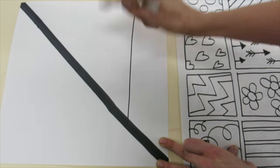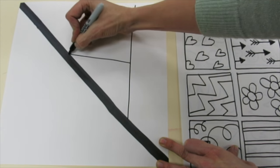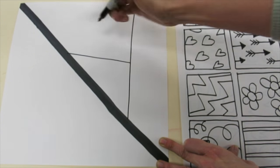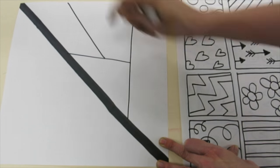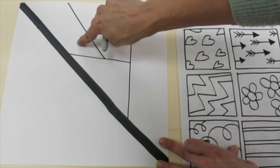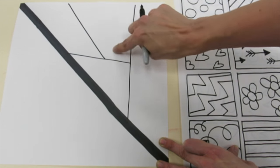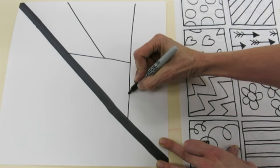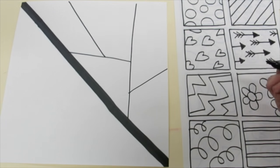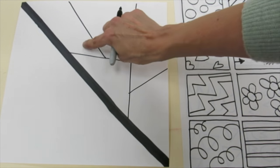So now I have one, two parts. One, two, three. One, two, three, four. One, two, three, four, five parts.